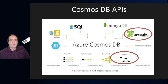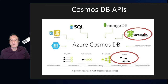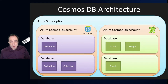We've also got comprehensive service level agreements covering the availability and latency of Cosmos DB. This diagram shows the four database models: key value, column family, documents, and graph, along with the various APIs we can use to connect to Cosmos DB. In this demo, I'm going to be exploring the graph database model using the Gremlin API — these two work together.